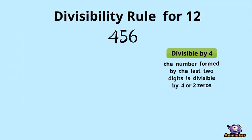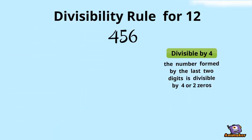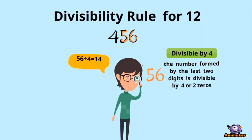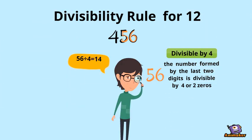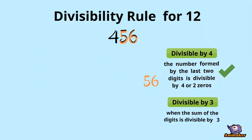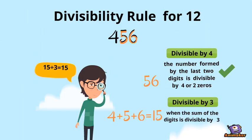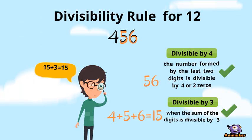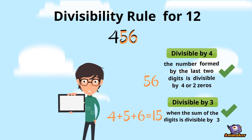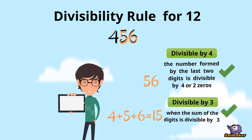Example: 456. First, check the number formed by the last two digits. Next, check if the sum of the digits is divisible by 3. Since 456 is both divisible by 3 and by 4, then 456 is divisible by 12.